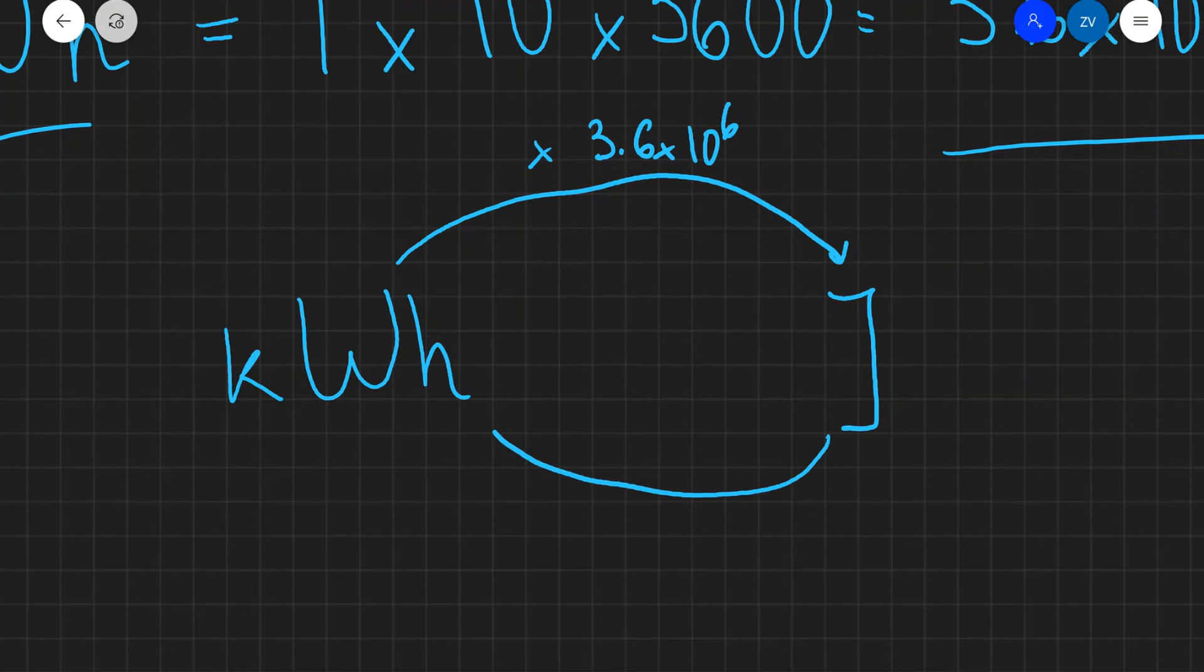And if we wanted to go the other way from joules to kilowatt hours, all we would need to do is divide by 3.6 times 10 to the power of six. Remember that if we're inputting this into a calculator, we need to include brackets after the division sign.